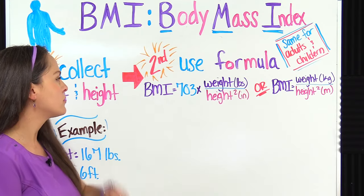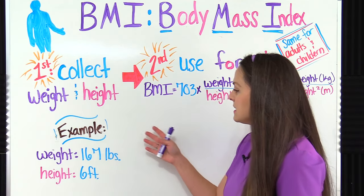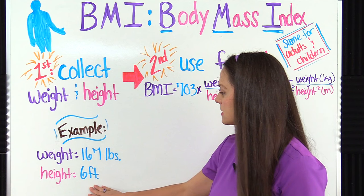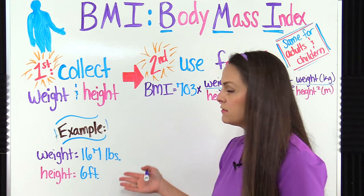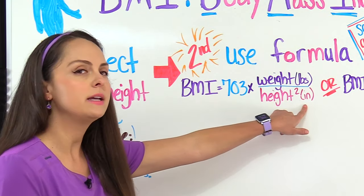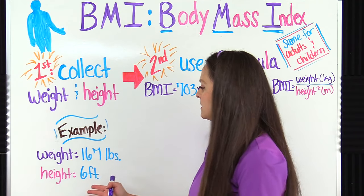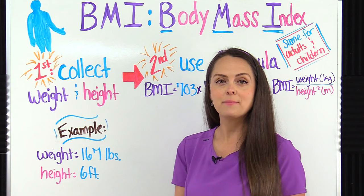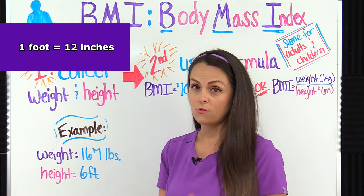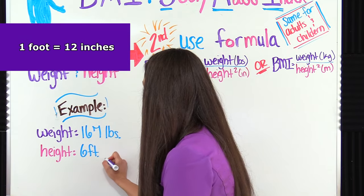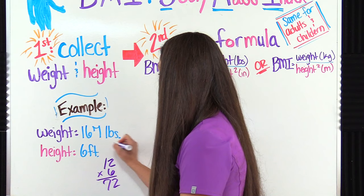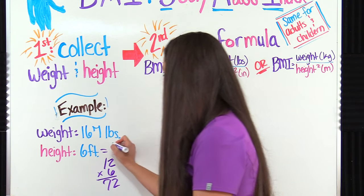First we're going to use the imperial formula because our example is in imperial units. Our patient weighs 167 pounds and they have a height of six feet. Because we're dealing with pounds and feet we can use this formula. But notice in the height part it needs to be in inches. So what we need to do is convert six feet into inches. We know that there are 12 inches in one foot, so we're going to multiply 12 by 6 and that gives us 72. So 6 feet is equivalent to 72 inches.